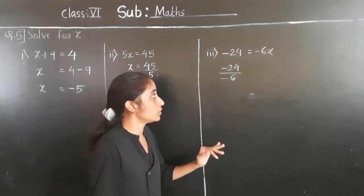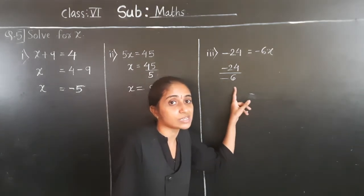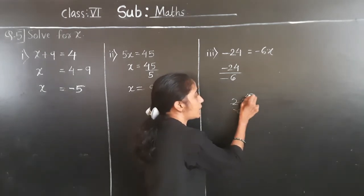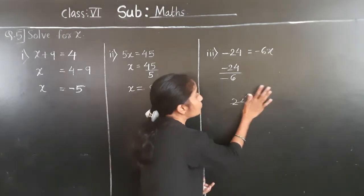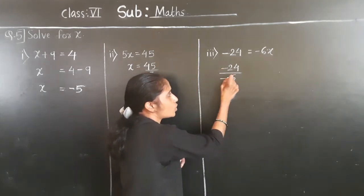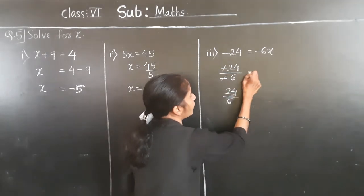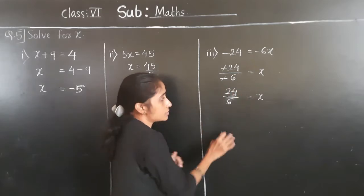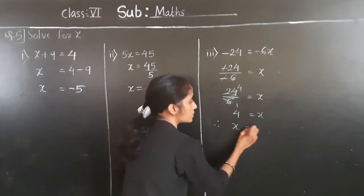So minus 24 divided by minus 6: when we divide a negative integer by a negative integer, we divide them as a whole number — that is 24 divided by 6. You can also see it as: the minus sign on the numerator and the minus sign on the denominator cancel each other. 6 ones are 6, 6 fours are 24, so x is equal to 4.